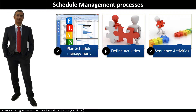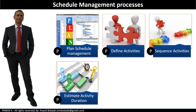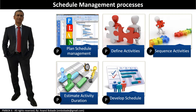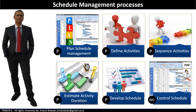Sequence activities, again under the planning process group, is the process of identifying and documenting relationships among the project activities. Estimate activity duration, again under the planning process group, is the process of estimating the number of work periods needed to complete individual activities. Develop schedule, under the planning process group, is the process of analyzing activity sequences, duration, resource requirements, and schedule constraints to create the project schedule model.